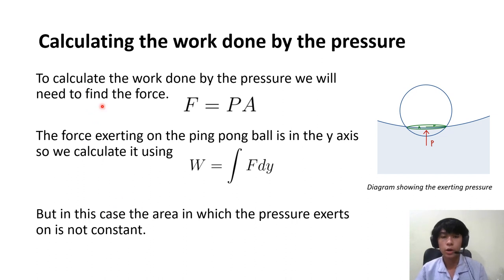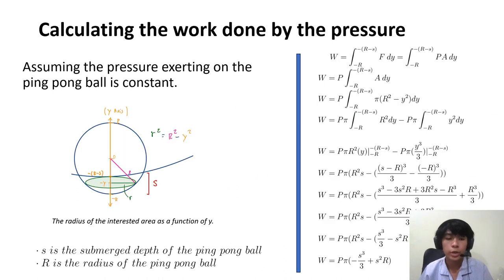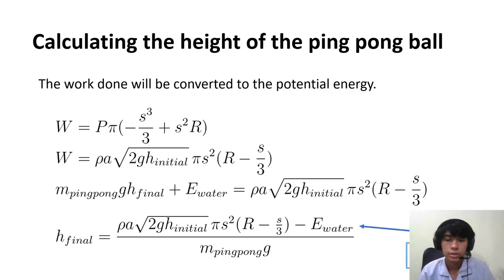And now we can calculate the work done by the pressure by integrating F dy right here. We are also assuming that the pressure exerting on the ping pong ball is constant. So we can solve for this integral. So we will get the equation to determine the final height of the ping pong ball.